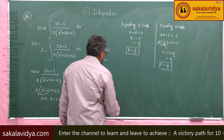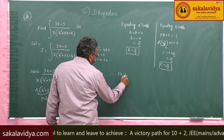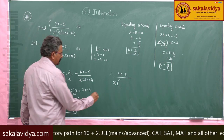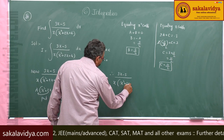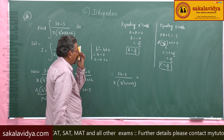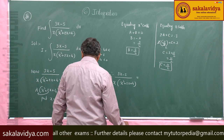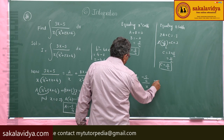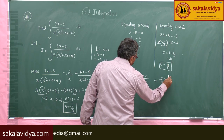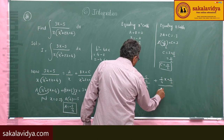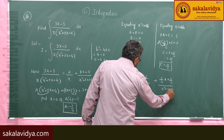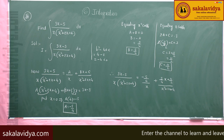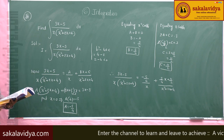So now the partial fractions are: (3x minus φ) divided by x(x² + 2x + 4) equals (minus φ/4) over x plus (φ/4 · x + 11/2) over (x² + 2x + 4). Now we have to find out the integral using these partial fractions.